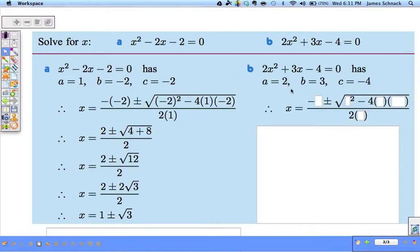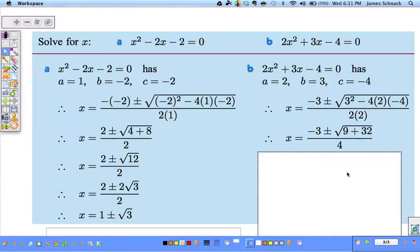So, we start out identifying that a is equal to 2, b is equal to 3, and c is equal to negative 4. We're going to plug those things in to the quadratic formula. Now, 3 squared is 9, negative 4 times 2 times negative 4 is 32. 2 times 2 is 4.